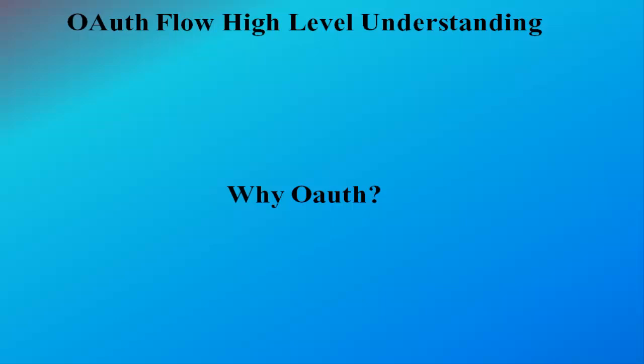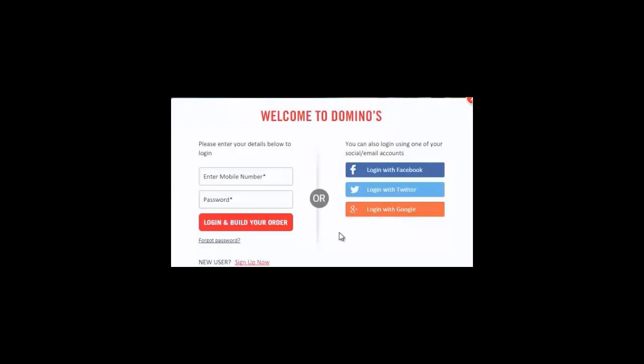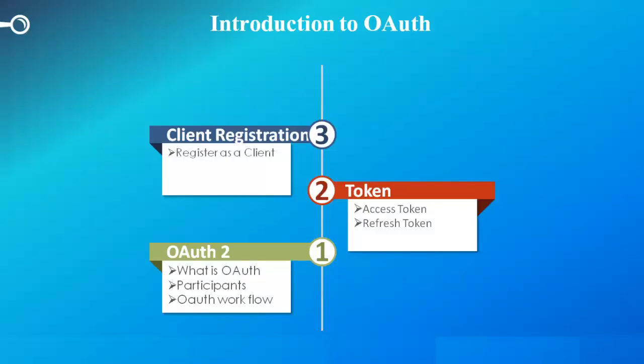Let's look into the high-level steps involved in facilitating authorization delegation to an application. The first and foremost prerequisite is that the client needs to be registered with the authorization server in order to delegate authorization through OAuth. This client registration is a one-time process by which an application owner, i.e. the client, registers his application with the authorization server so that the client can request resource owner's data in a delegated way. This part is not visible to the normal resource owner as in most cases this is done by the application development team. The protocol only defines the parameters that must be specified by the client and those to be returned by the authorization server.